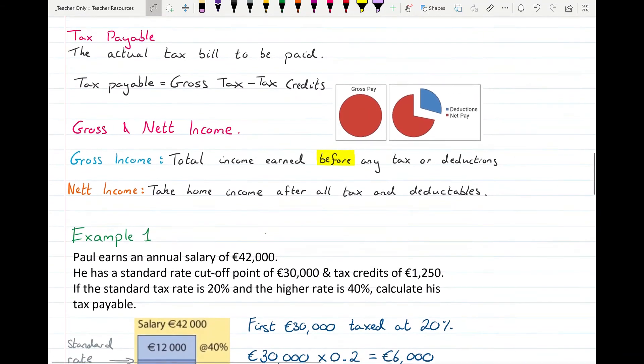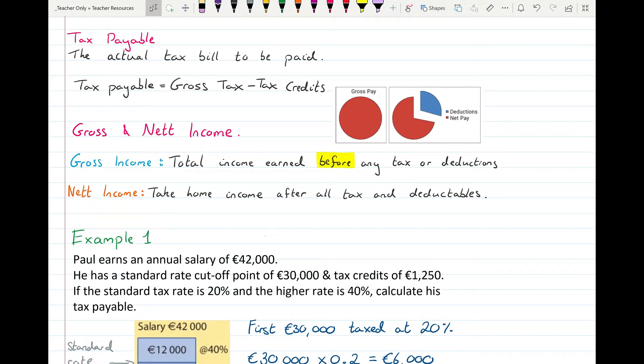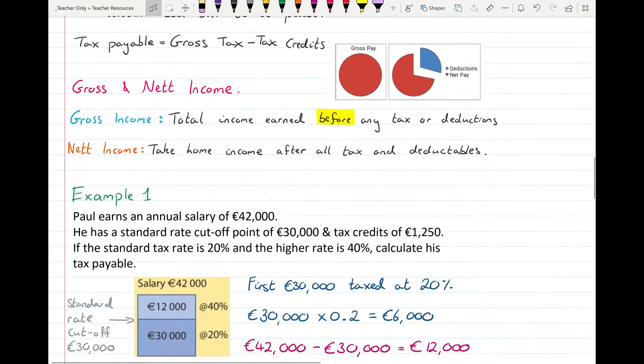In the first example here, Paul earns an annual salary of €42,000. He has a standard rate cutoff point of €30,000 and tax credits of €1,250. If the standard rate is 20% and the higher rate is 40%, calculate his tax payable. So he's going to be paying 20% on his first €30,000. And then because he's earning €42,000, that means there's €12,000 that's going to be in the higher tax bracket because the €30 and the €12 add up to €42. So €30,000 at 20%, and then the €12,000 is going to be taxed at the higher percent, which is 40%.